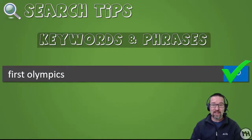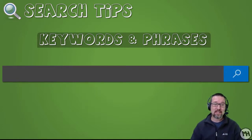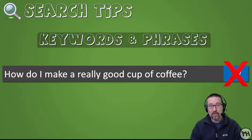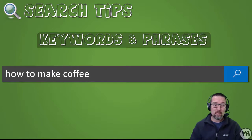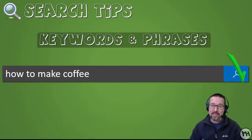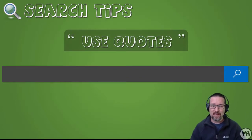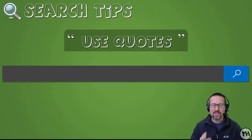Another example: instead of 'how do I make a really good cup of coffee,' just write 'how to make coffee.' Keep it simplified with keywords and phrases.